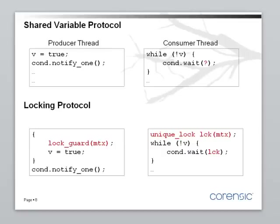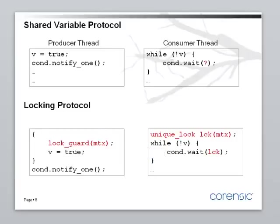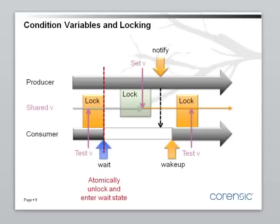This is why the lock used in the consumer thread is not a simple lock_guard; instead it's a unique_lock. A unique_lock has additional methods: lock and unlock. This is what condition wait does — it unlocks the lock and then waits until a notification comes. When the notification comes, it re-locks the lock. So the testing and the code that follows is protected by the lock, but inside wait, the lock is released.